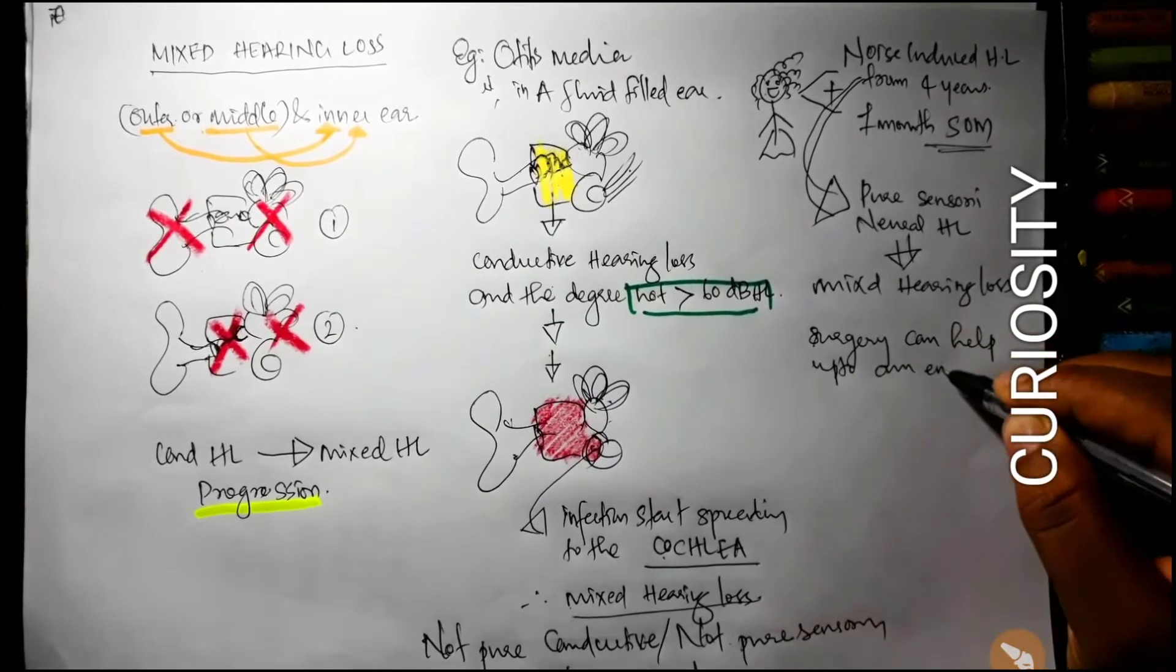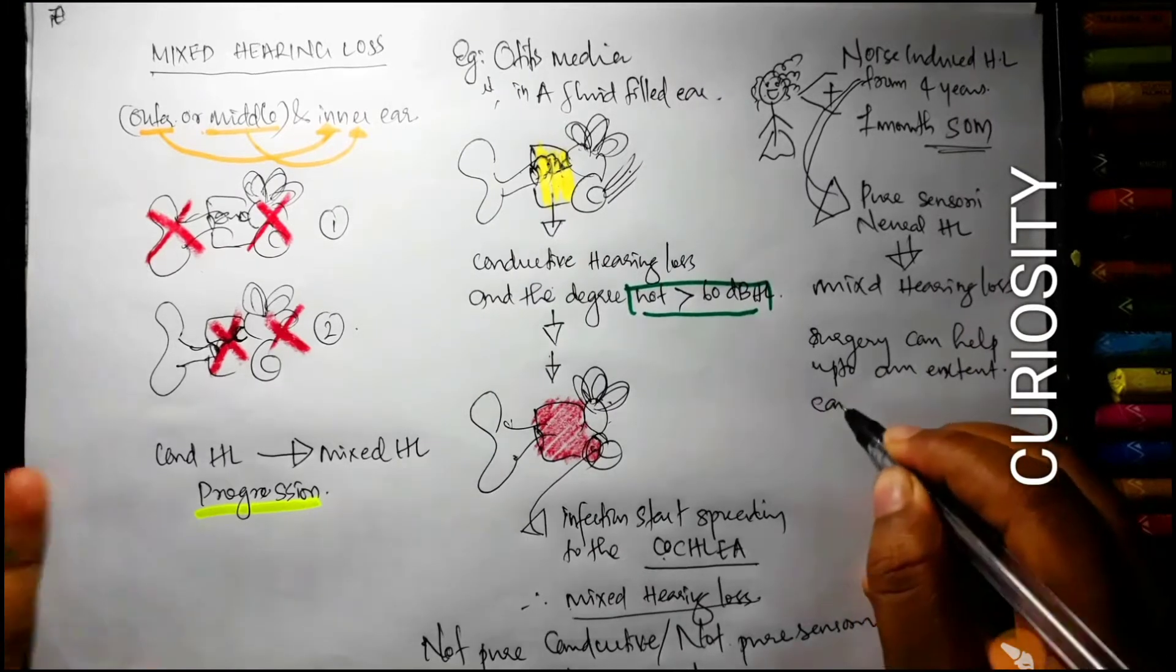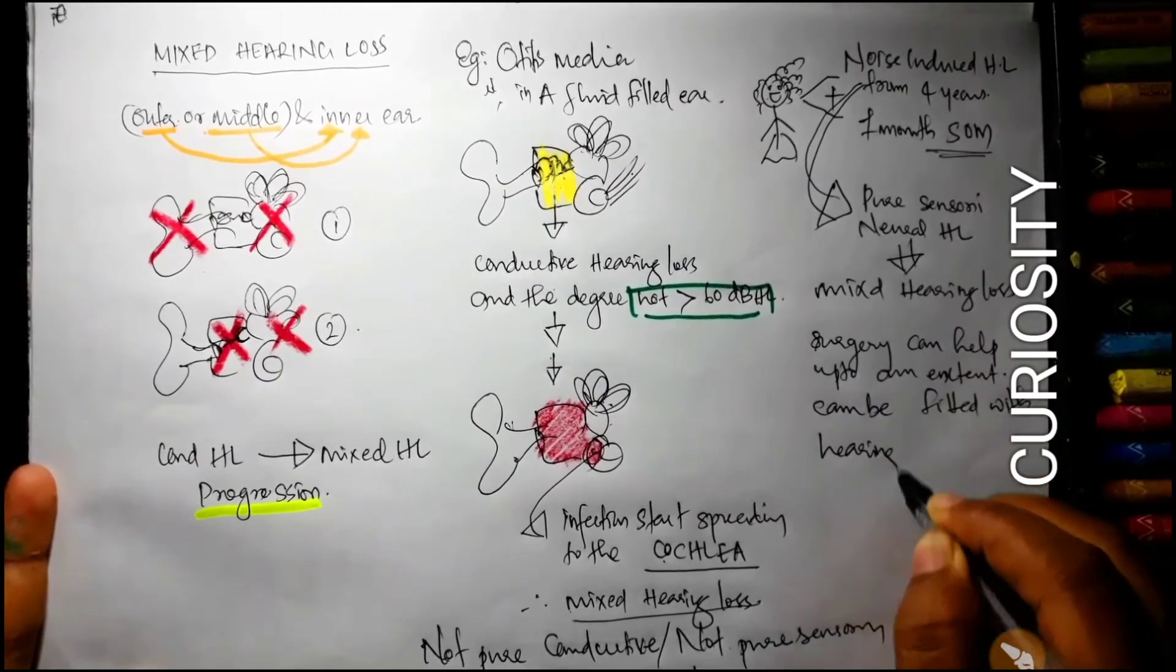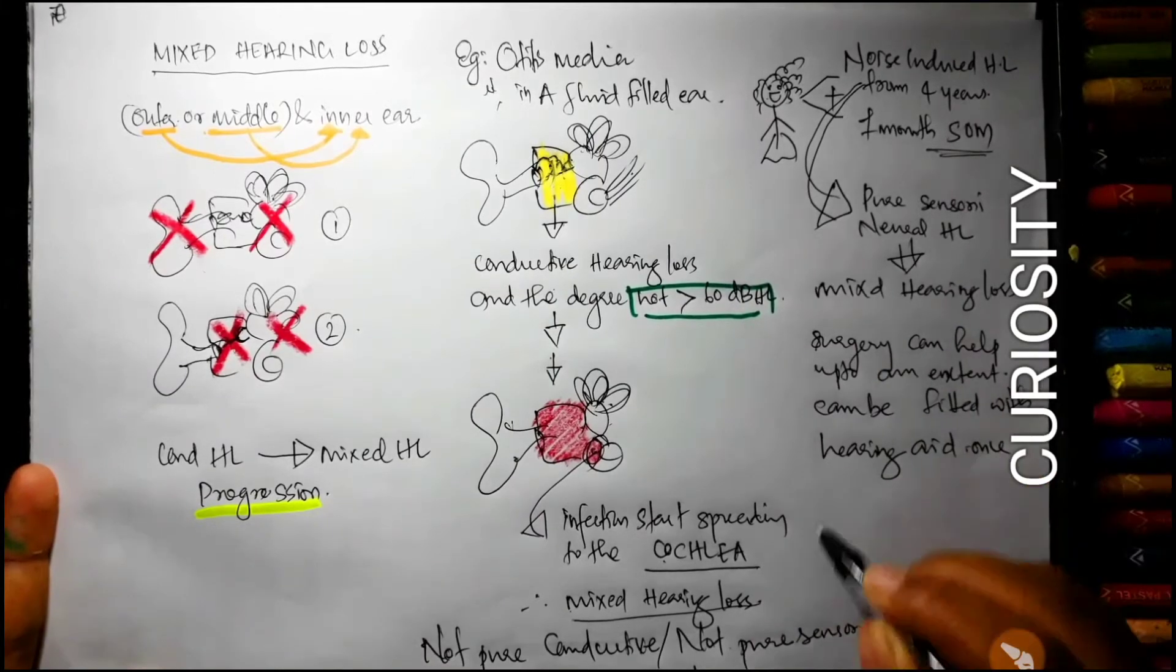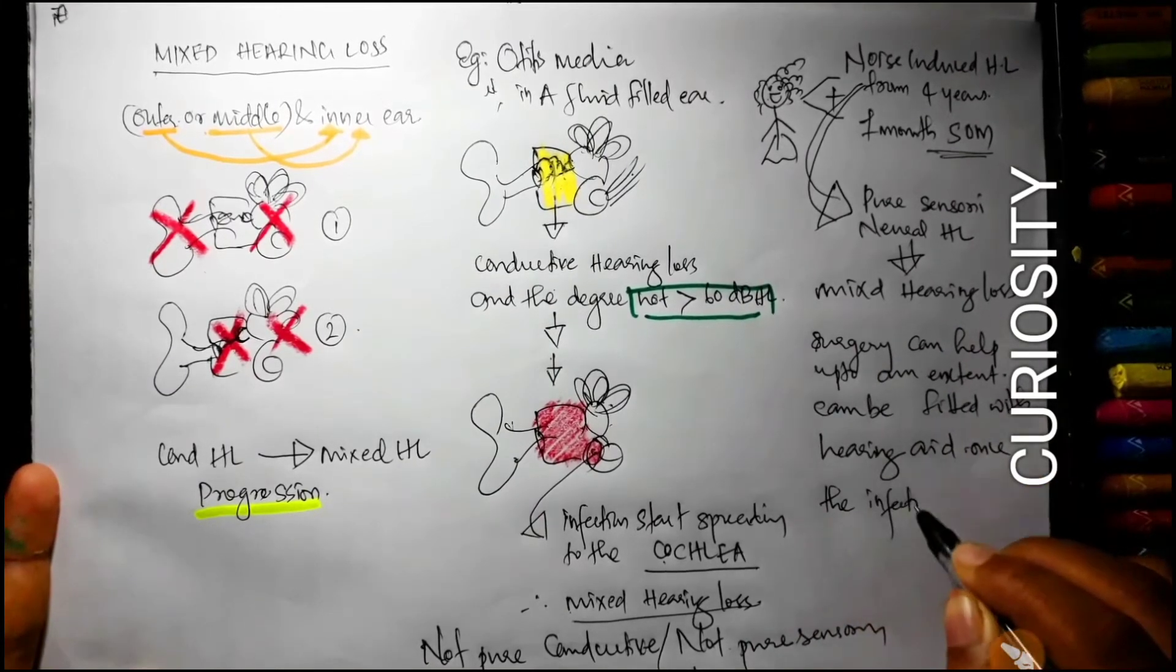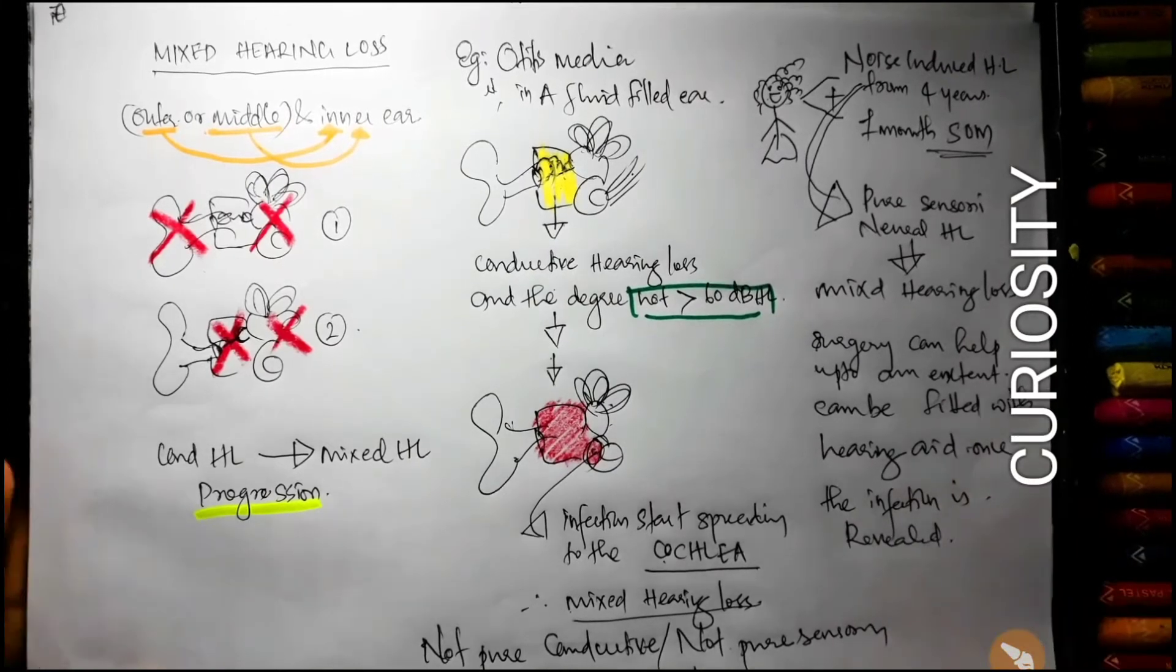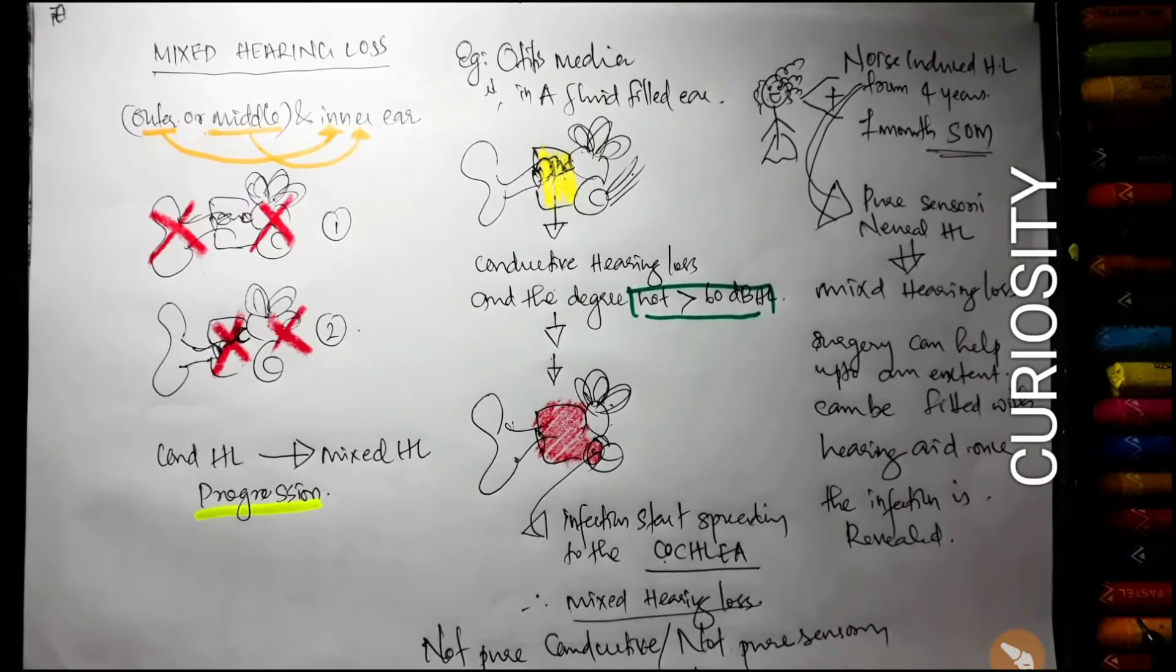In this case, since there is a middle ear pathology, surgery can help up to an extent. In this particular case, if she inserts a grommet, that middle ear problem can be slightly solved, but hearing aid can be the option.